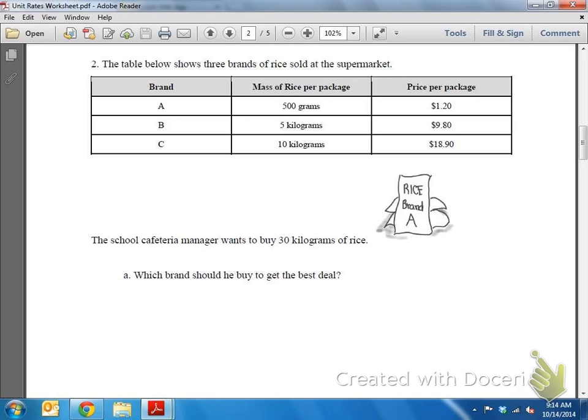So we're talking about money. Typically, we like to save money, so we want to try to find the cheapest price possible. The question asks us, which brand should he buy to get the best deal? First thing we're going to do, look at my mass of rice per package. Brand A is 500 grams, brand B is 5 kilograms, and brand C is 10 kilograms.